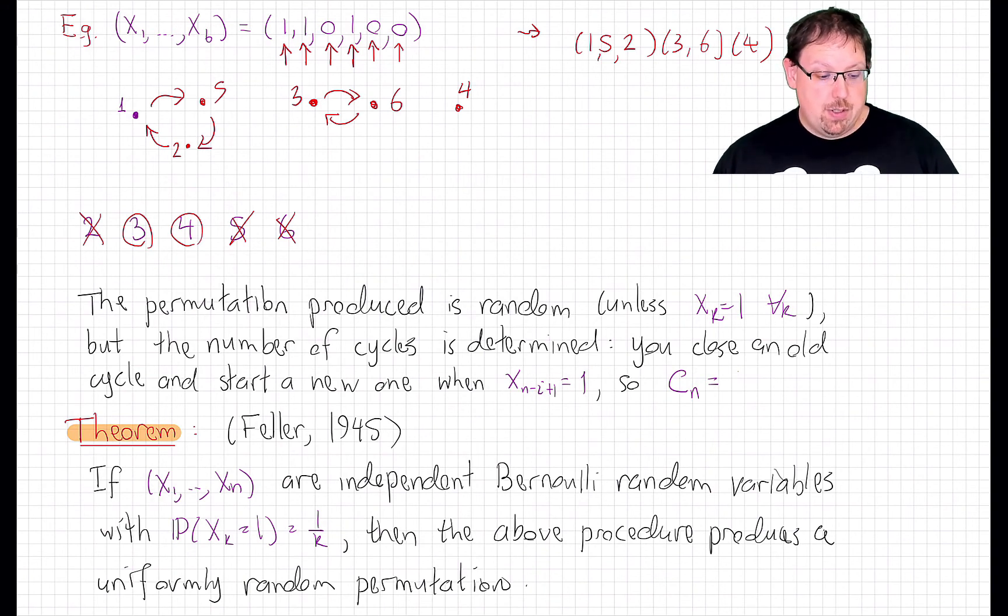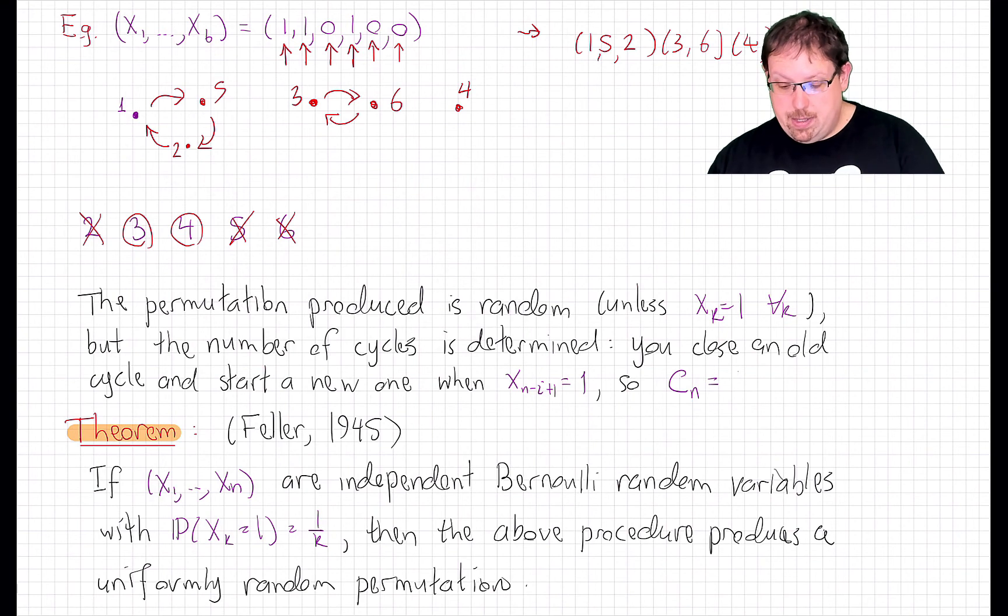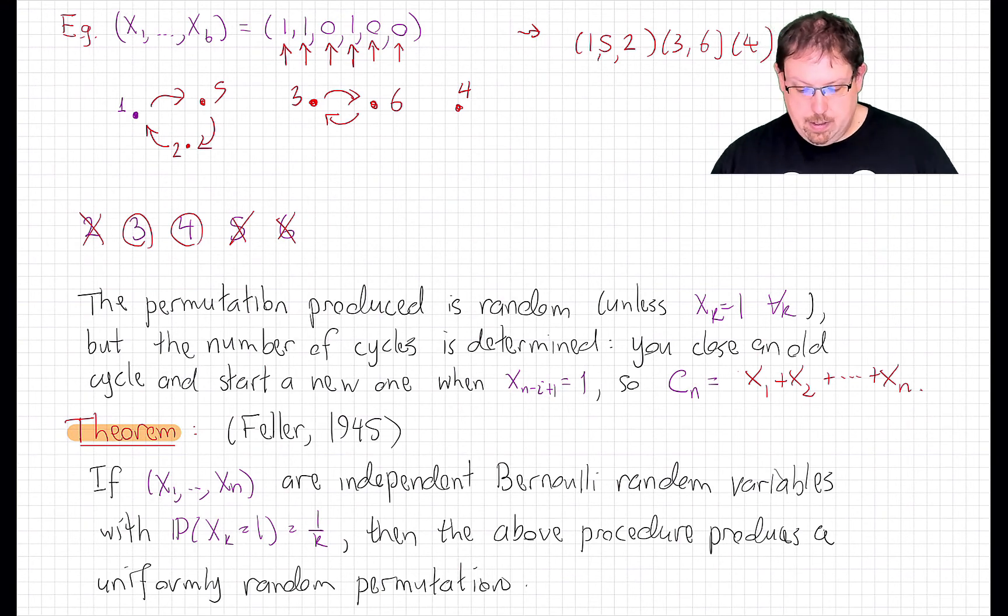What is fixed by this sequence is precisely the number of cycles. The permutation produced is random, but the number of cycles is just determined by the number of 1s in the sequence. You will close off a cycle every time you see a 1. And so the number of cycles in the produced random permutation will be the number of 1s in the sequence. But since it's a sequence of 0s and 1s, another way to write that would be as the sum of those digits.